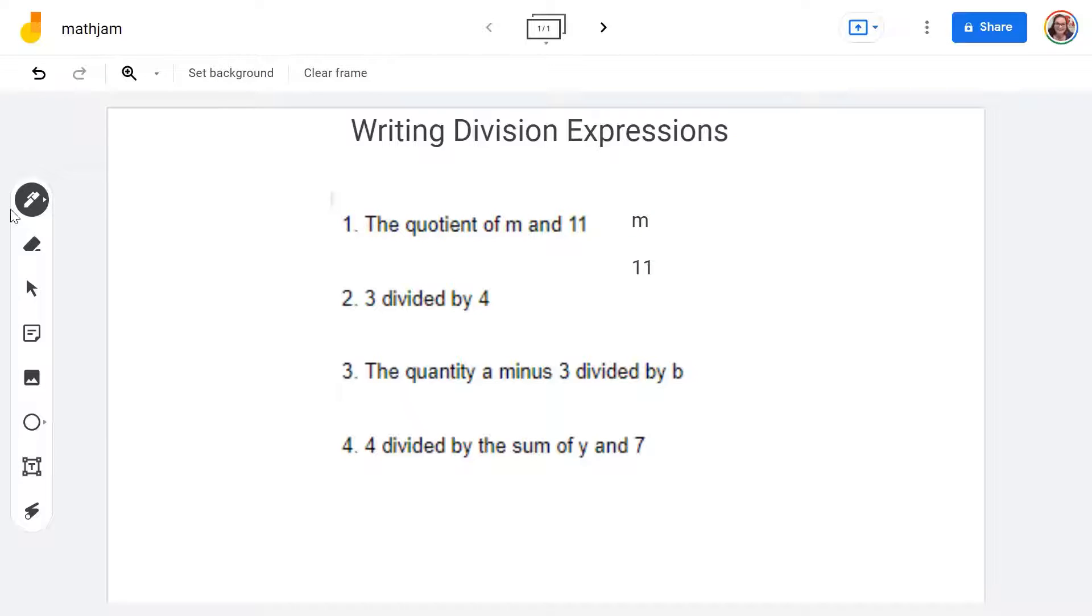Now the program that I'm using here, which is Jamboard, it will not allow me to draw a proper division problem or proper fraction. So just bear with me. So we've got our M here, our 11 here, and I'm just going to put a wavy line in between them. So that's how you would write that one out as an expression. So there we have the quotient of M and 11.